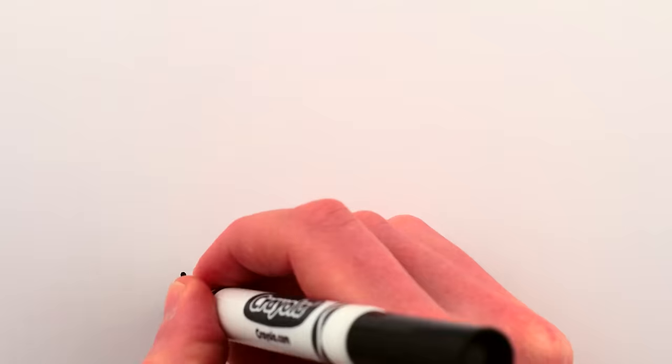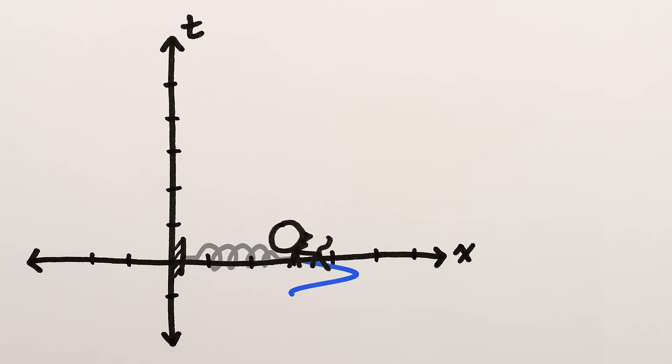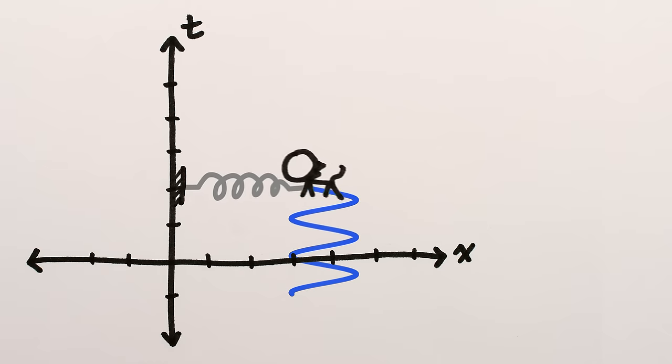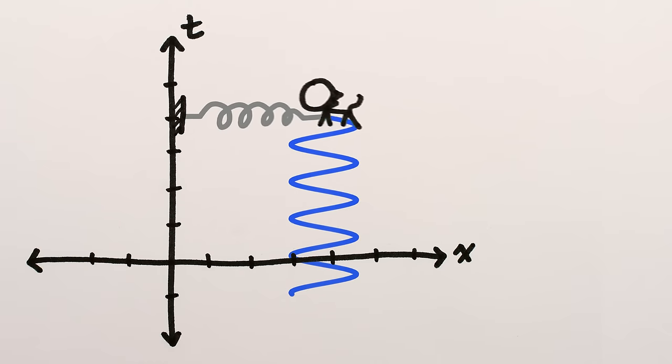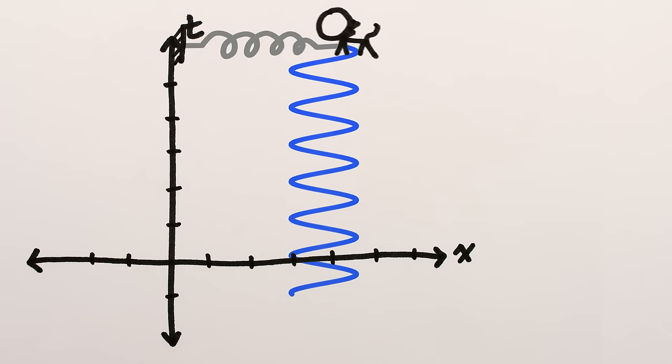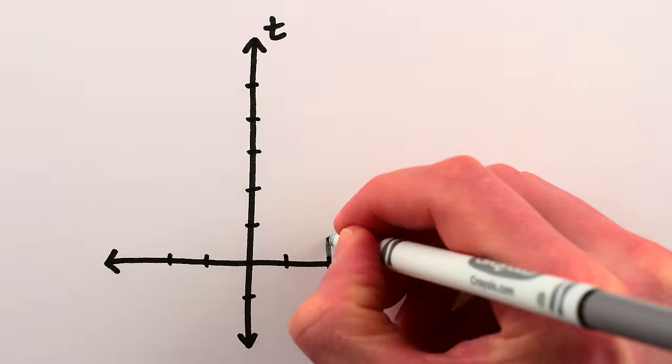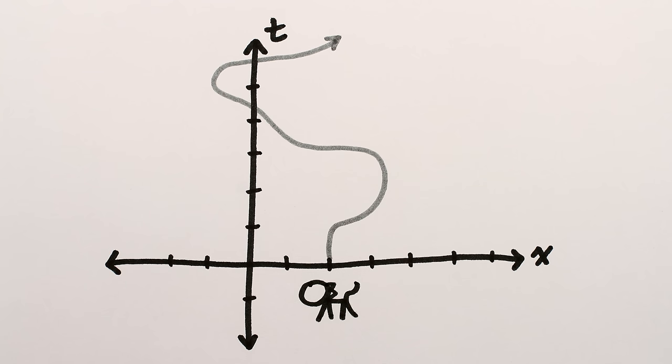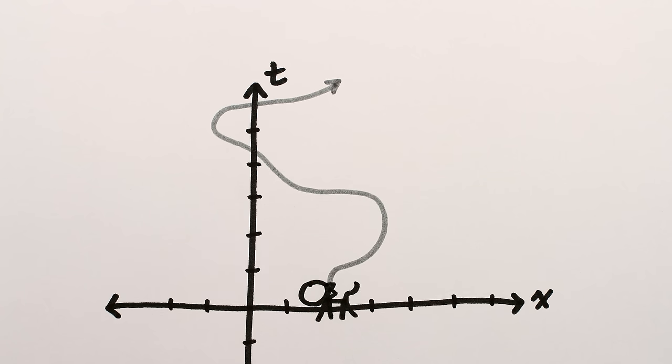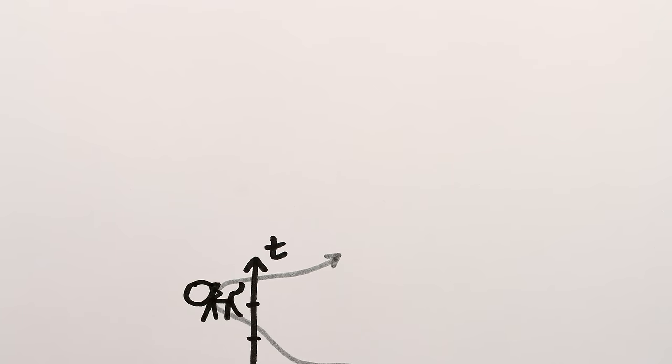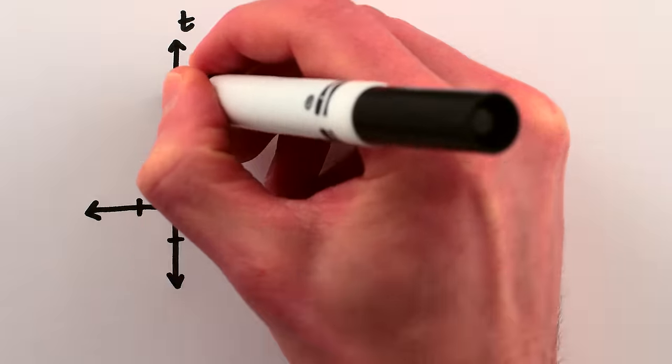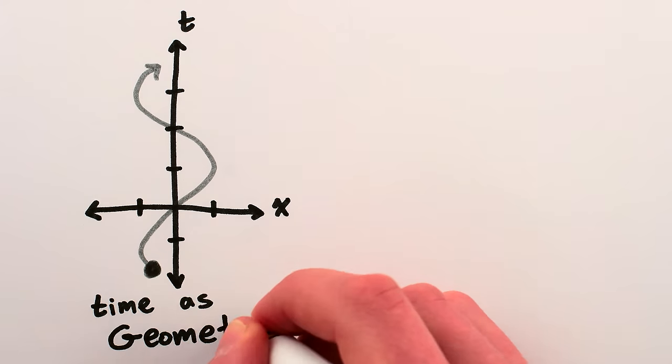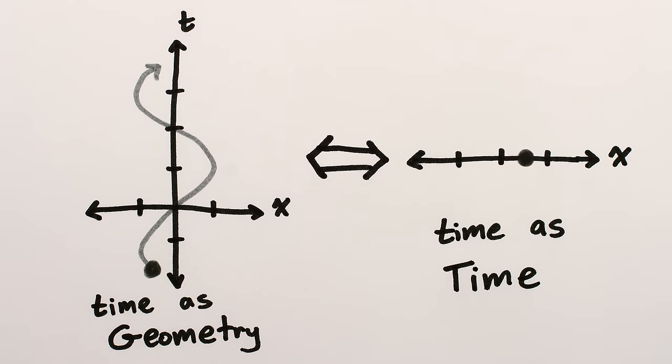Say we have a cat attached to a spring, bouncing back and forth, left and right. If we plot this motion on a spacetime diagram, as time passes, we see the cat move left and right, leaving behind a trace in the shape of a sine wave. On the other hand, if we're given a spacetime diagram and want to recover the motion of the cat, we simply slide the diagram downwards at a constant rate, and move the cat left and right so that it follows along the traced out path. This is important. A traced out path in a spacetime diagram is a faithful recording of an object's motion.